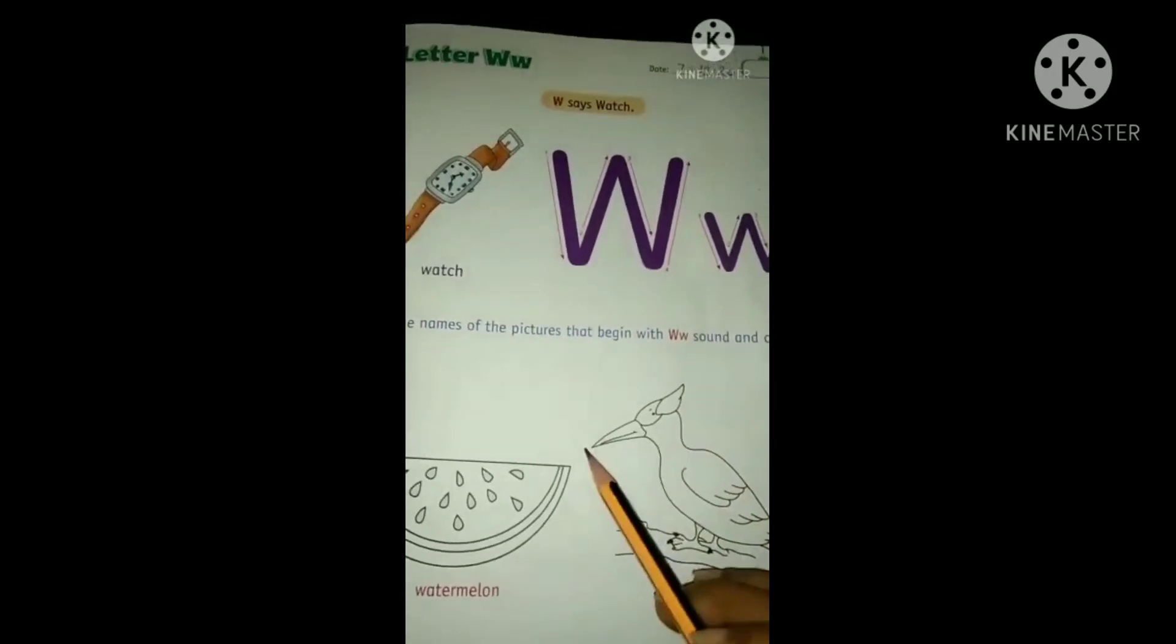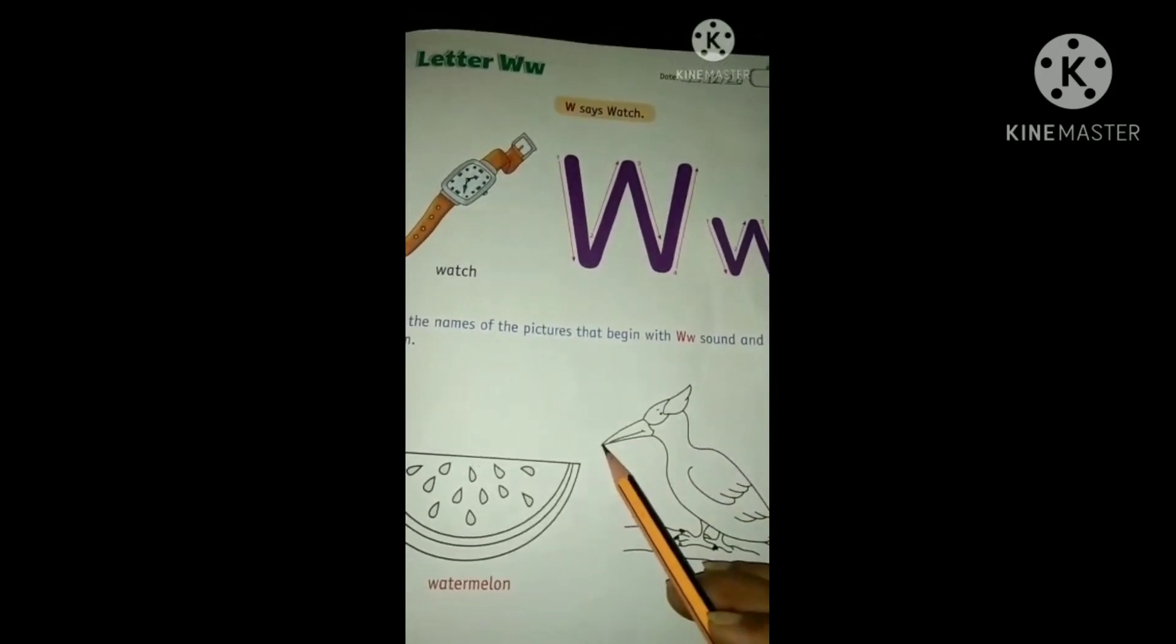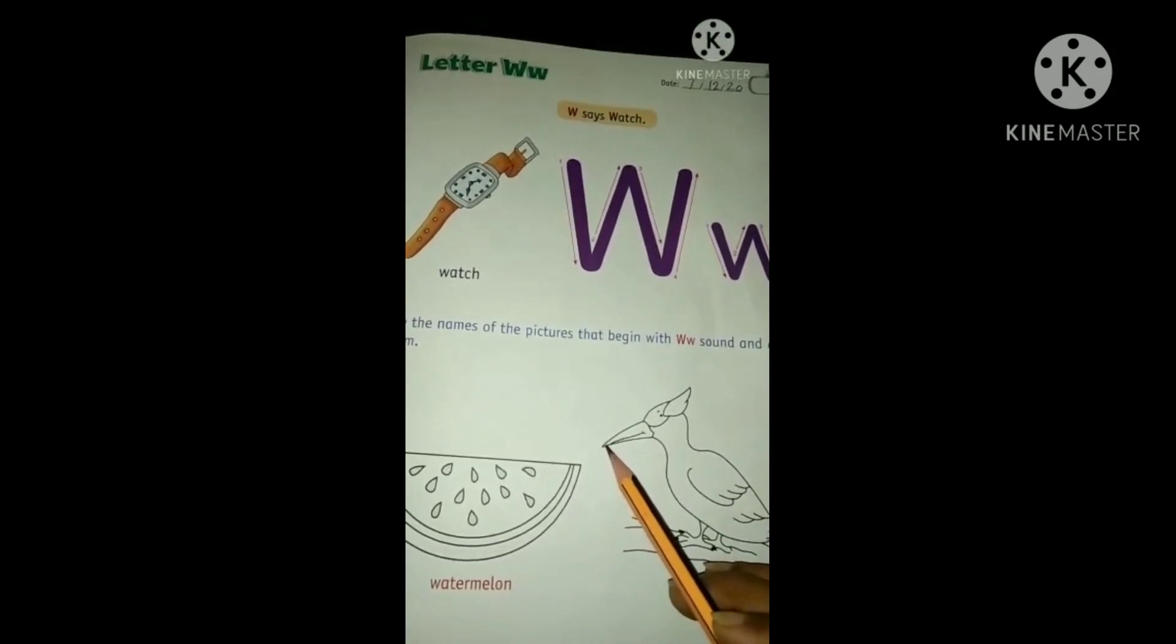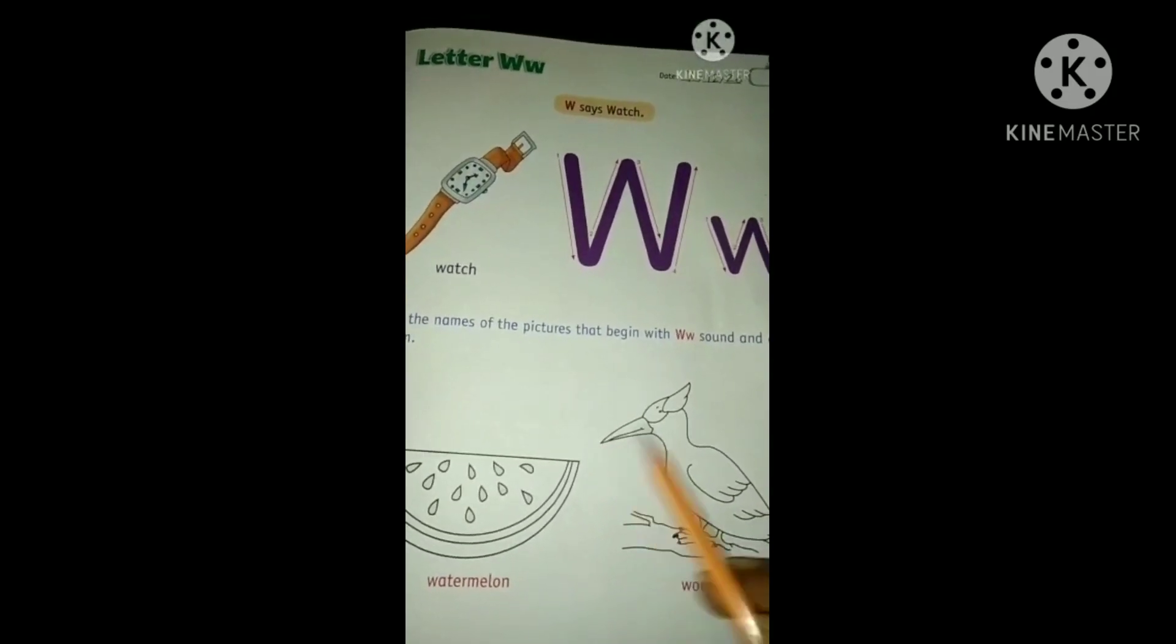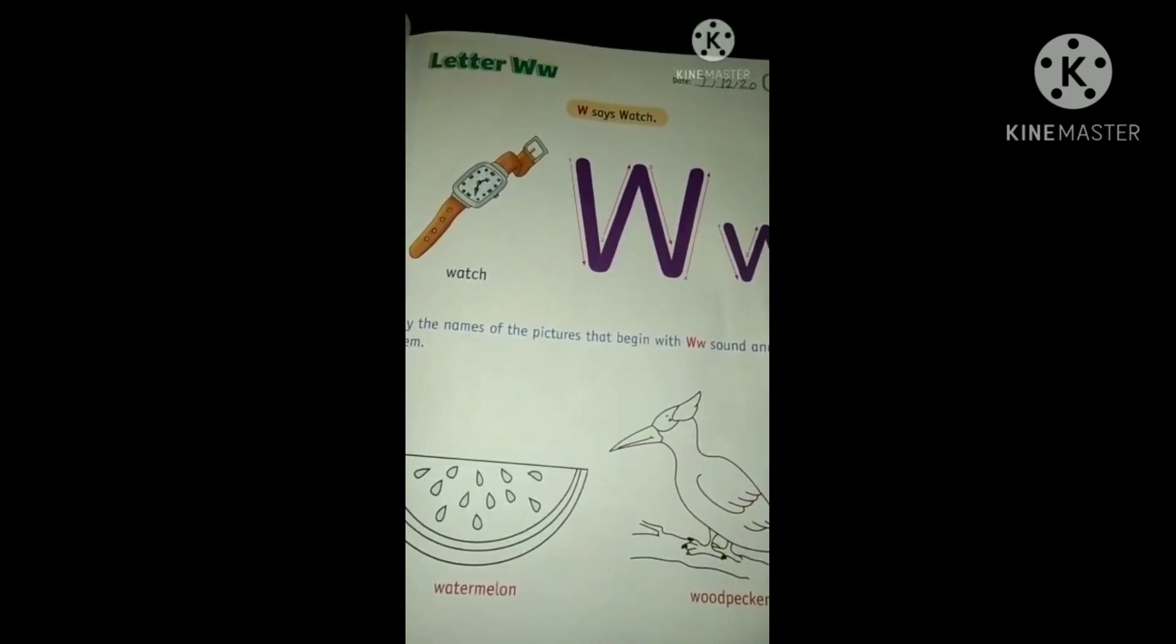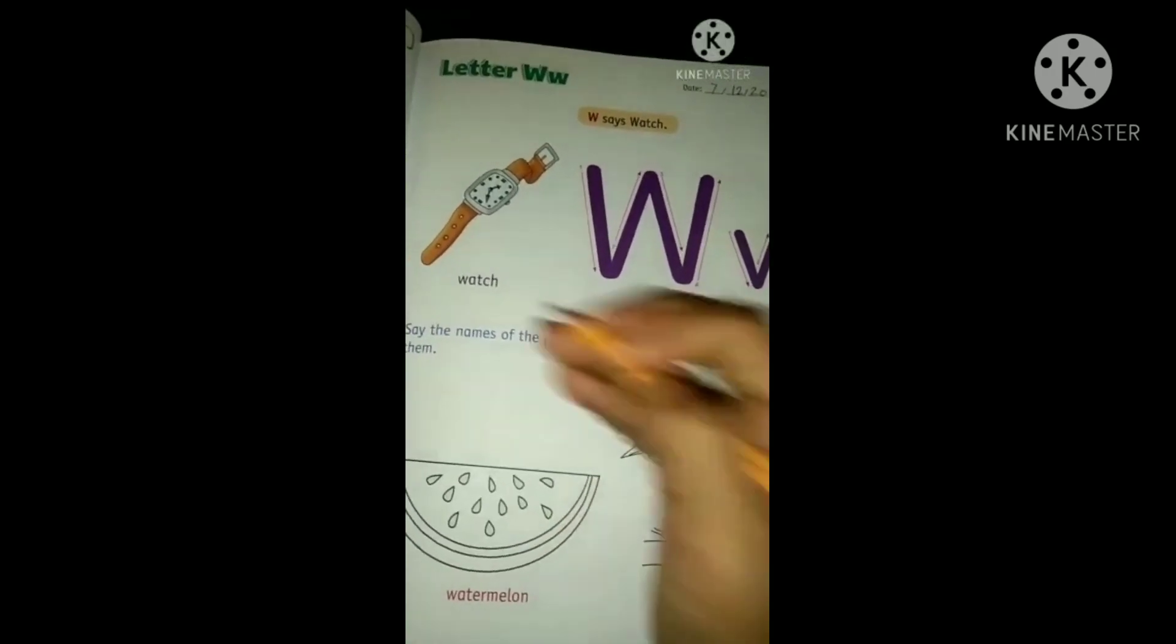Because it has sharp beak and to make a nest, it uses its sharp beak to make a hole in the tree. And you know you have to color these two pictures.